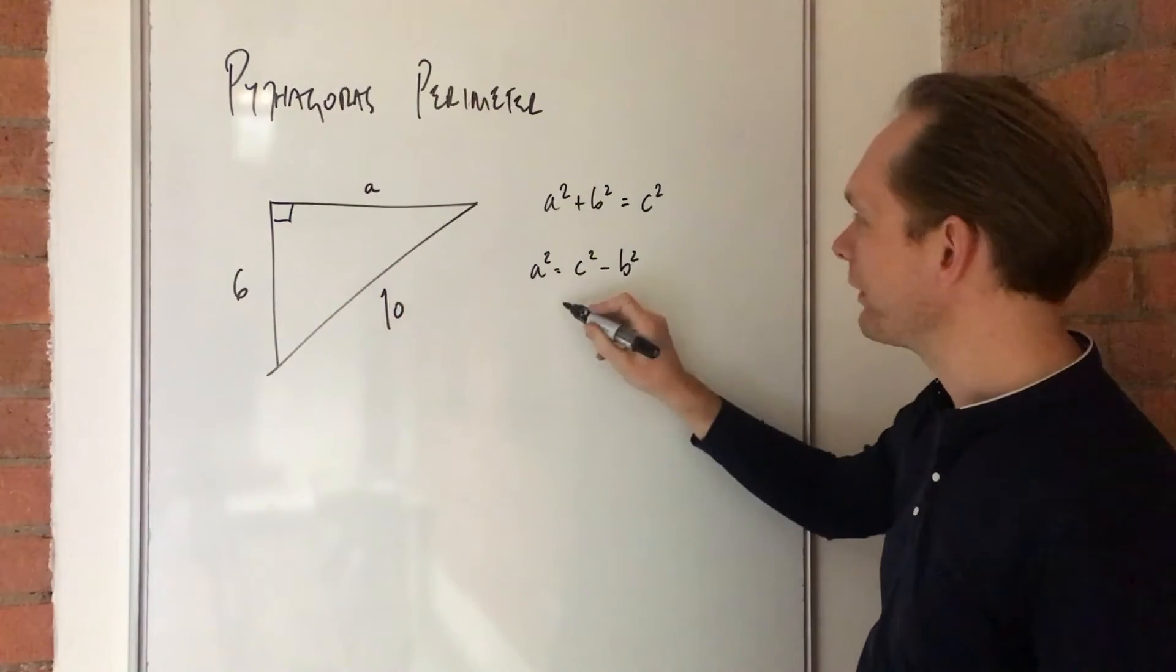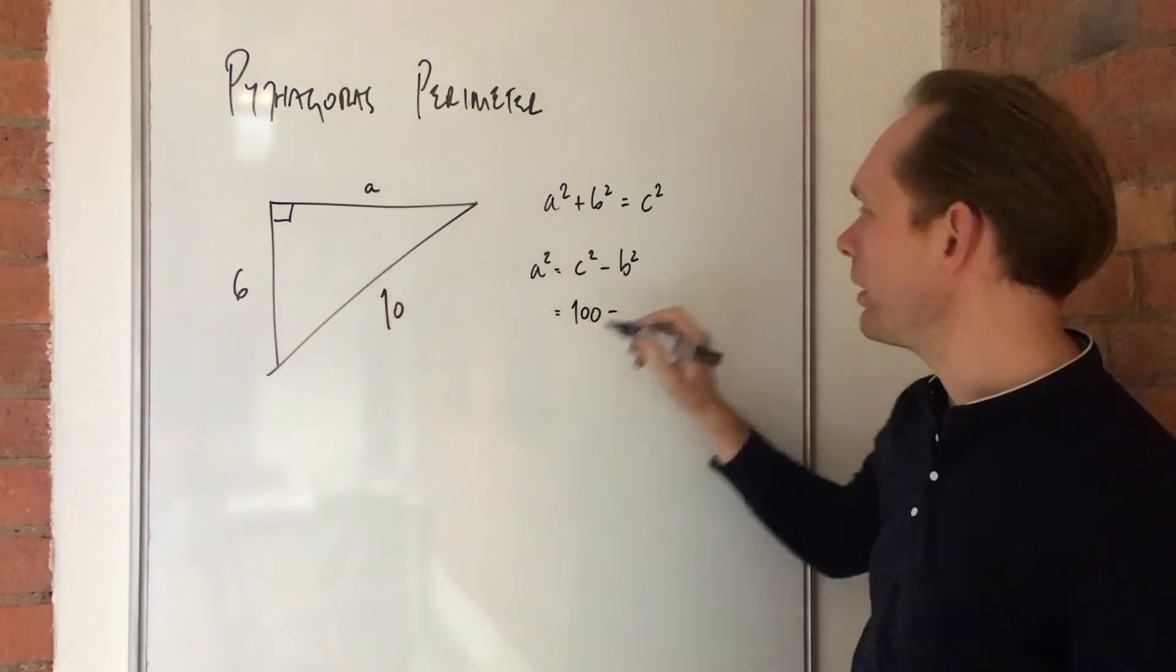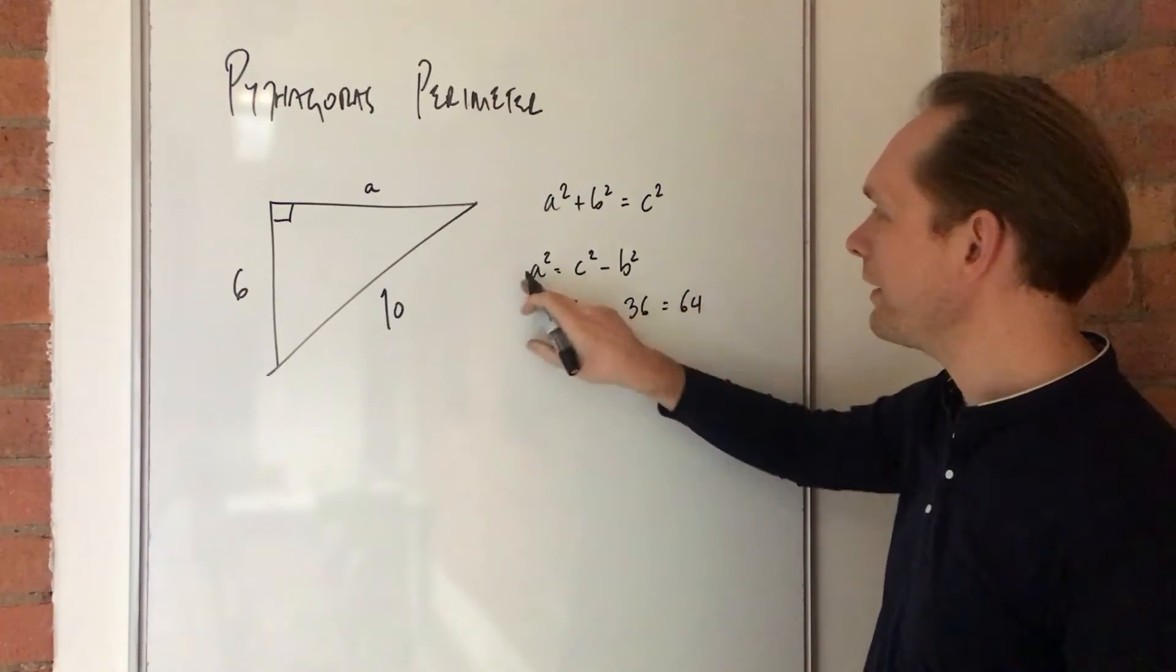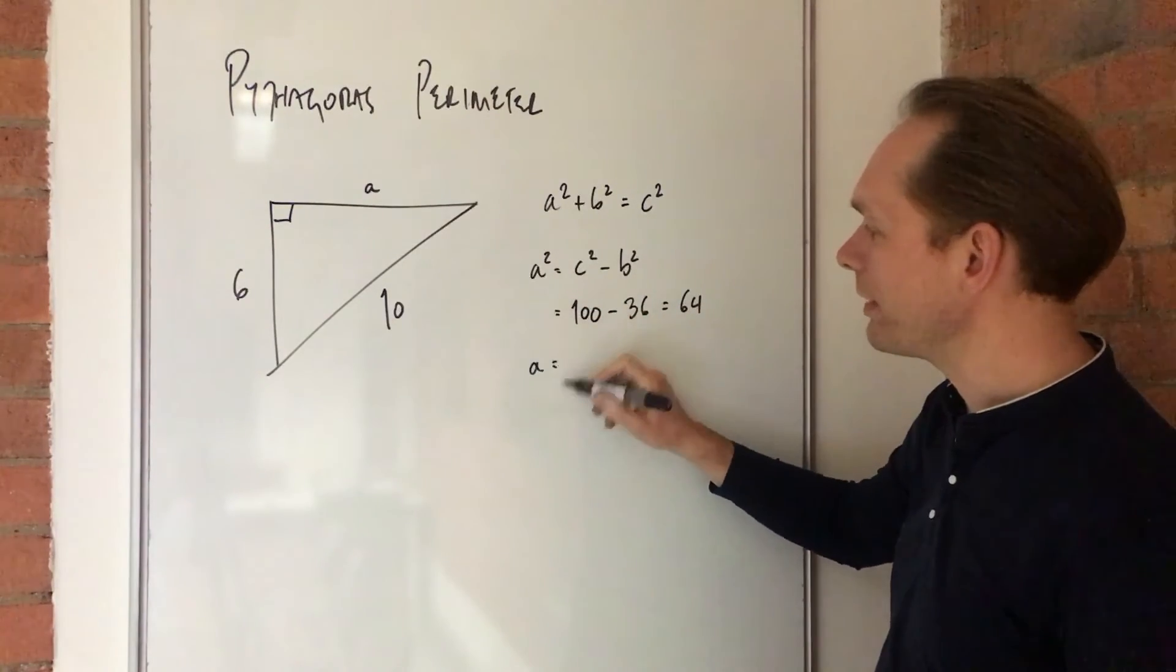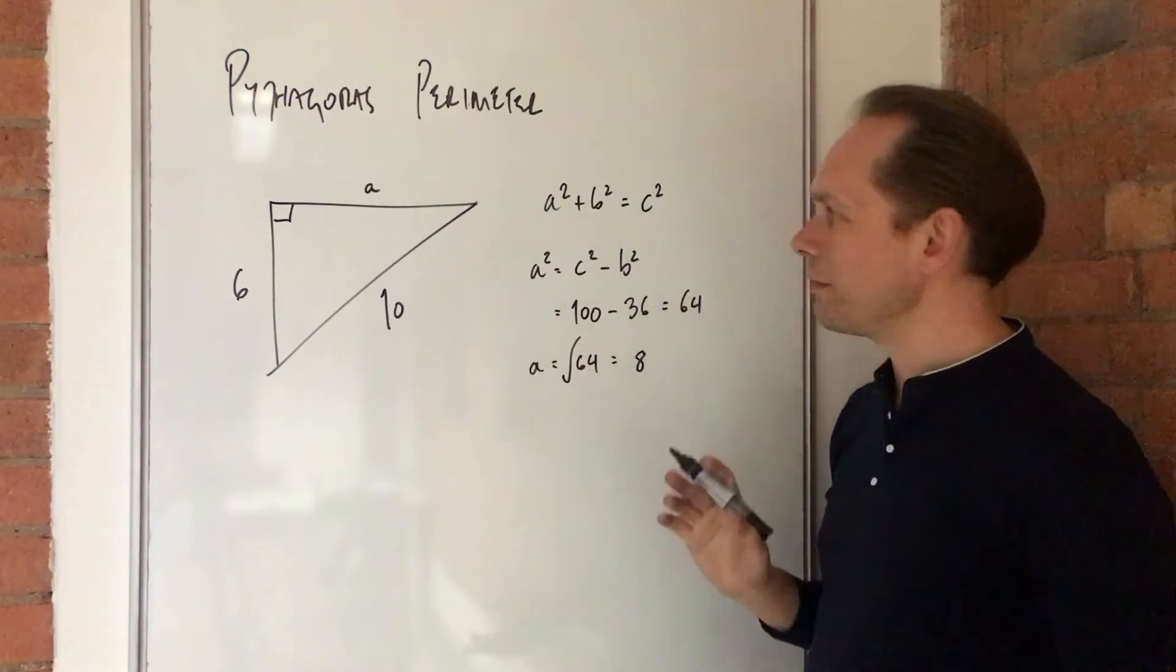And then we can put in our values and say, well, it's 100 take away 36, which is 64. Well, if a squared is 64, then a is going to be the square root of 64, which conveniently is 8, because we use nice numbers here.